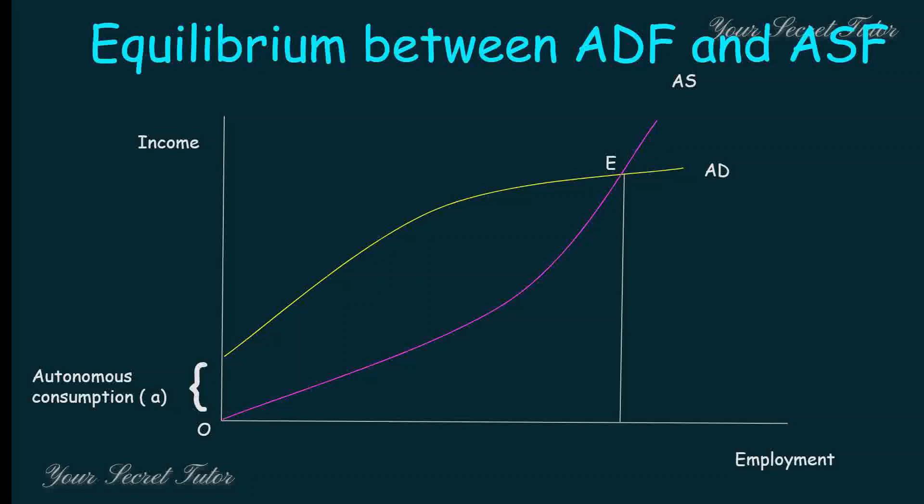Effective demand is the point where all the products that have been produced have been sold. At this equilibrium point, we can say it is the effective demand point. The level of employment at this equilibrium point is denoted as N0.